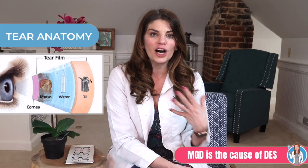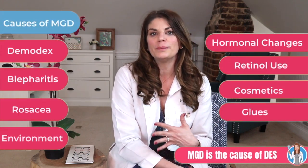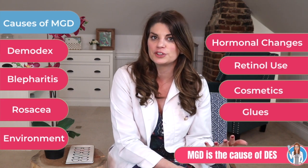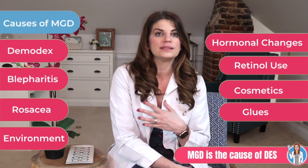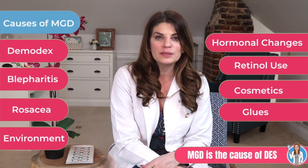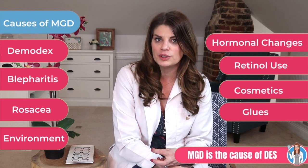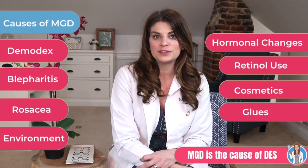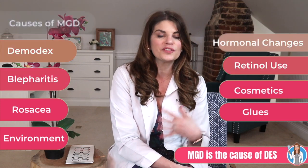What causes meibomian gland dysfunction? There are a myriad of things: Demodex mite infestation, bacterial infections or bacterial overpopulation of the lid margin as occurs in blepharitis, ocular rosacea, and environment — such as computer use and lack of blinking, which leads to stagnation and thickening of the glands. You can also have meibomian gland changes from hormone changes, retinol use, use of cosmetics and glues, and other anti-aging things around the eyes like bakuchiol. Allergic conjunctivitis, autoimmune disease, inflammation of the cornea or conjunctiva, high cholesterol, and even preservatives can all be causes.